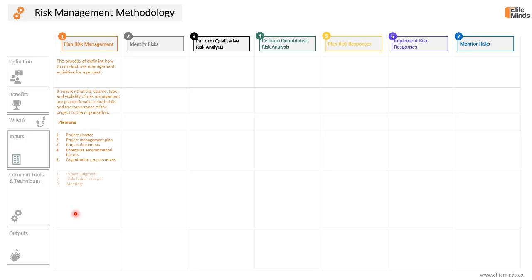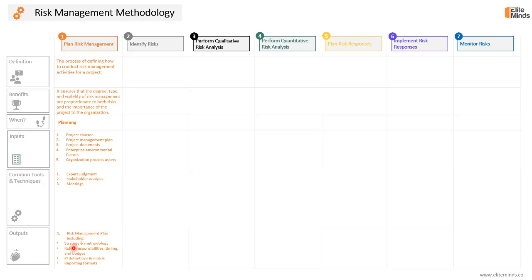Once you have these inputs, the tools and techniques we can use for this process are expert judgment — you need to consult with experts within or outside the organization. We will conduct stakeholder analysis as a data analysis technique to determine the risk appetite and risk thresholds of the stakeholders. We will also conduct meetings in order to plan for risk management throughout the project. One key output will be the result of the planned risk management process — the risk management plan.